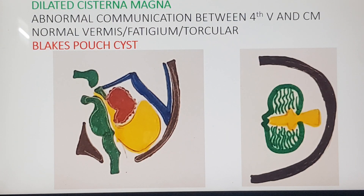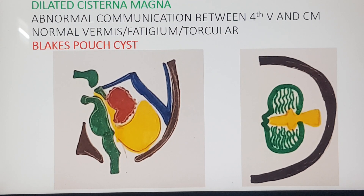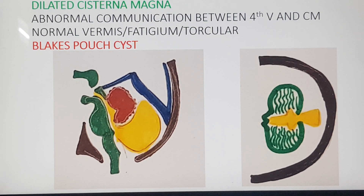Again we have a dilated cisterna magna, but there is an abnormal communication between the yellow fourth ventricle and the dilated cisterna magna. However, the vermis, fastidium, and tentorium are normal. This is a Blake's pouch cyst, both in mid-sagittal and axial view.